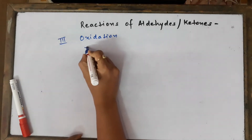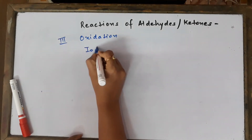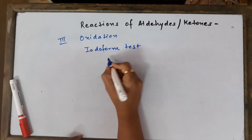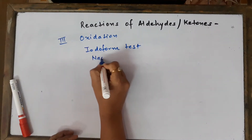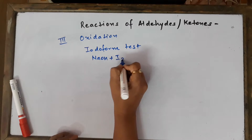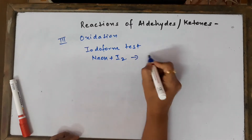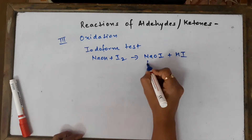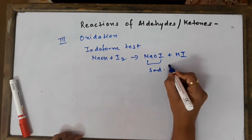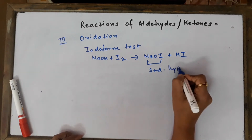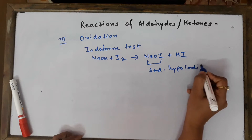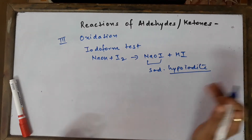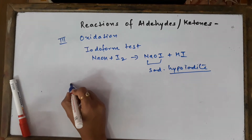The third reaction is also a kind of oxidation reaction, famously known as the Iodoform test. The reagent, as discussed in previous classes, is sodium hydroxide plus iodine, which gives NaOI plus HI, where NaOI — sodium hypoiodite — is the oxidizing agent, also called simply hypoiodite.